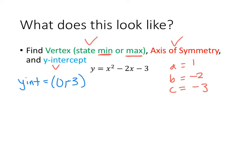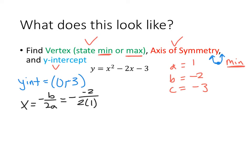Since a is positive, the graph points up, so the vertex is at the bottom — giving us a minimum. Now I need to find the axis of symmetry using x = -b / 2a. Plugging in: x = -(-2) / (2 × 1) = 2/2 = 1. So the x-coordinate of the vertex is 1, and the axis of symmetry is the line x = 1.